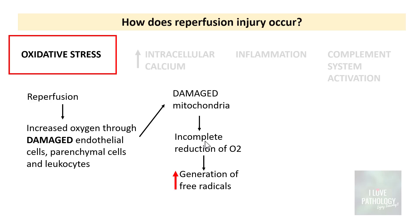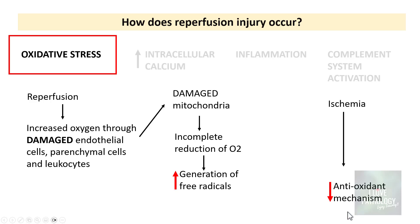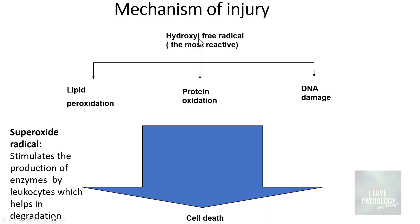During ischemia, the antioxidant mechanism is also reduced. So on one hand there is increased generation of free radicals, and on the other hand there are decreased antioxidant mechanisms — that is why there is free radical-induced cell damage. The mechanism of injury due to increased free radicals involves protein oxidation, lipid peroxidation, and DNA damage. Free radicals can cause all three of these, leading to cell death.